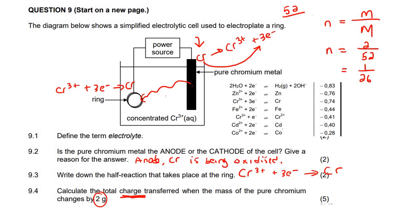So we want to convert this. If we know that this is 1 and this is 3, then the ratio of chromium to electrons is 1 to 3.